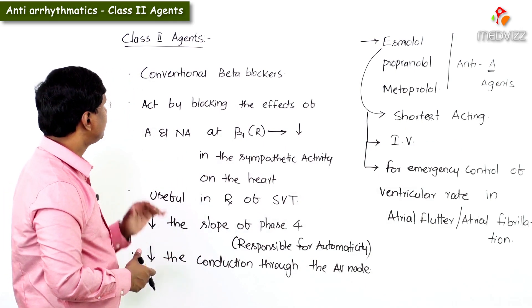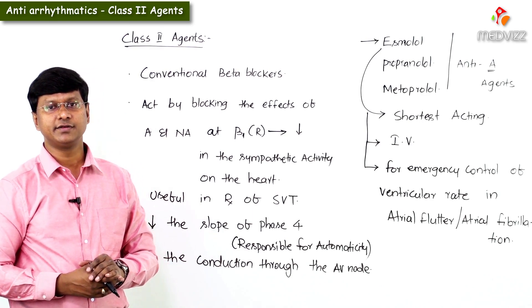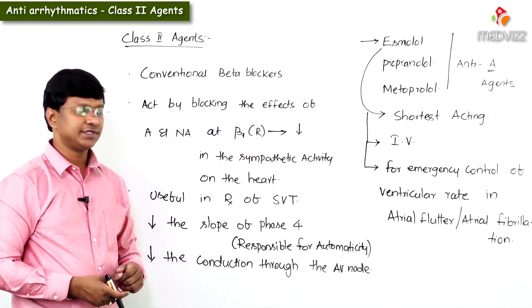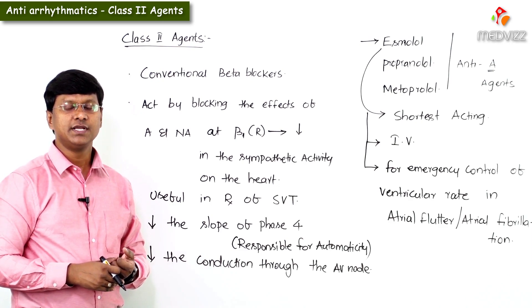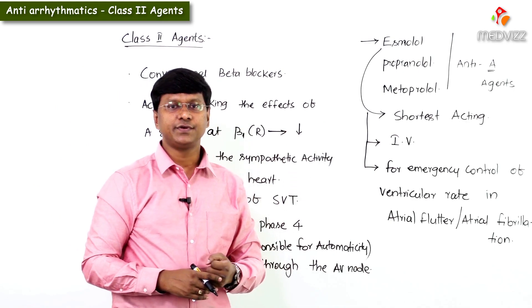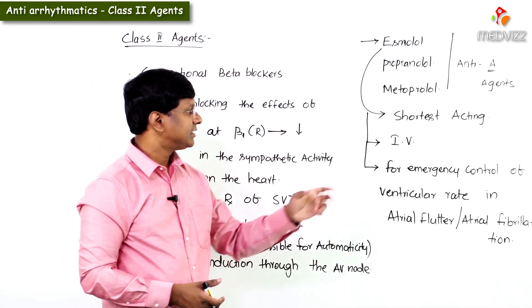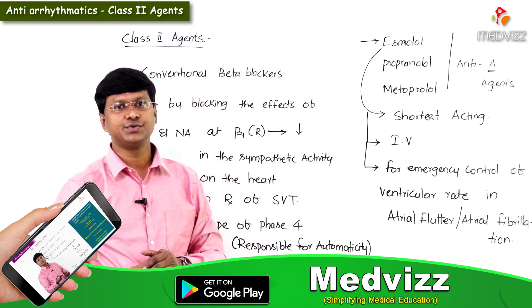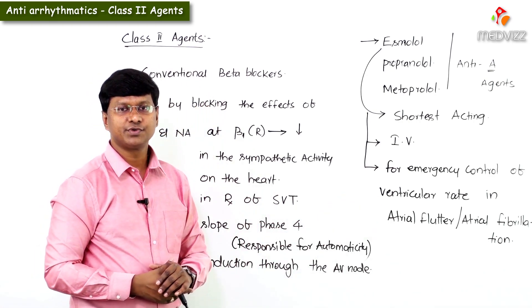To shortly revise Class 2 agents: these are conventional beta blockers that act by blocking the effects of adrenaline and noradrenaline at the beta-1 receptors, thereby decreasing sympathetic activity on the heart. They are particularly useful in supraventricular tachycardias. These drugs decrease the slope of Phase 4, reducing automaticity, and also decrease conduction through the AV node. The important beta blockers used as anti-arrhythmic agents are esmolol, propranolol, and metoprolol. Esmolol is the shortest acting and is given intravenously for emergency control of ventricular rate in atrial flutter and atrial fibrillation.